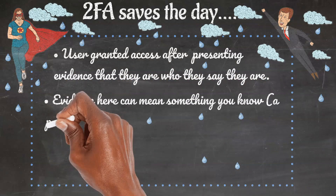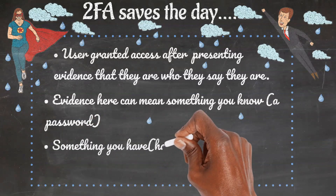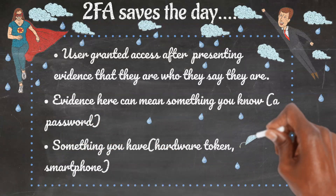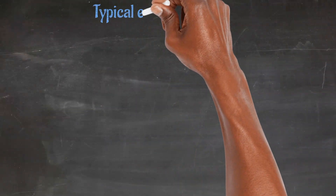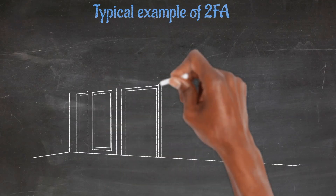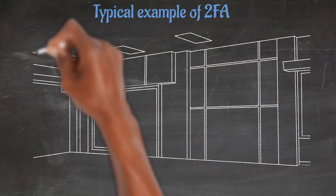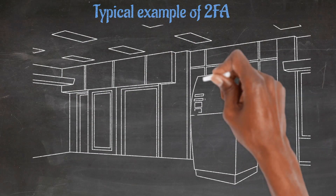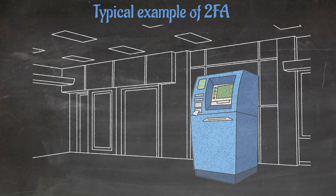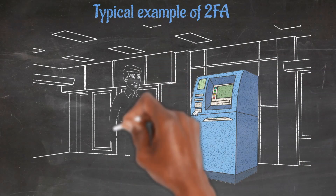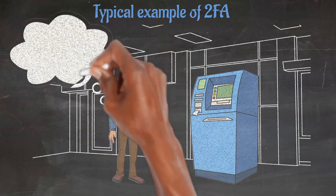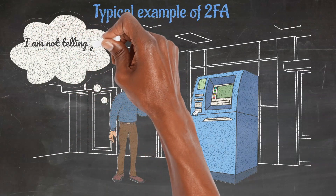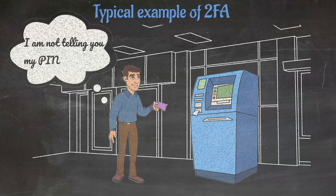Something you know, such as a password, a PIN, or answers to secret questions. Something you have, such as a hardware token, a bank card, or a smartphone. A relatable example of 2FA is using an ATM — you need a bank card, which is something you possess, and the PIN code, something you know, to retrieve money. Two-factor authentication adds a layer of security such that even if your password is stolen, the chances of a third party having the second factor information is highly improbable.